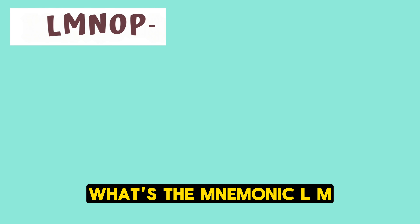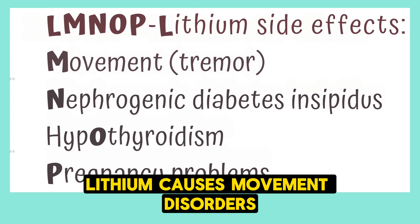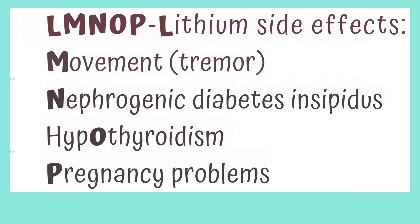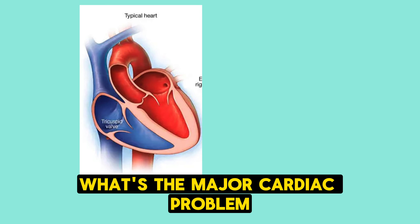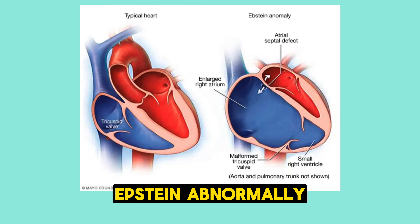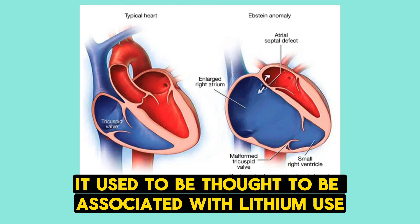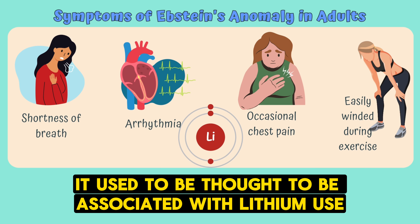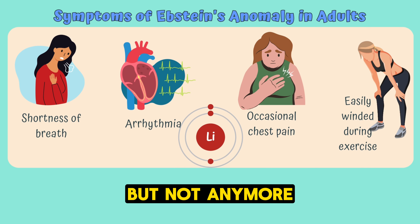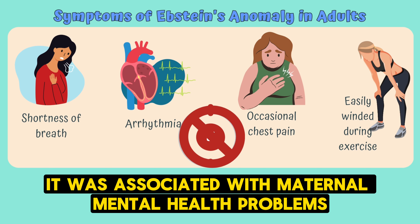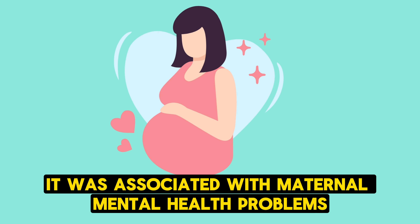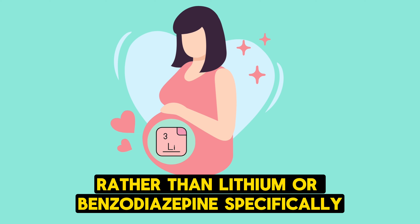What's the mnemonic LMNOP? Lithium causes: movement disorders, neurogenic diabetes insipidus, hypothyroidism, and pregnancy defects. The major cardiac problem — Ebstein anomaly — was previously thought to be associated with lithium use, but not anymore. It was associated with maternal mental health problems generally rather than lithium or benzodiazepines specifically, so changing or stopping medications may not be preventative.